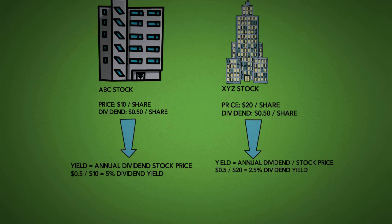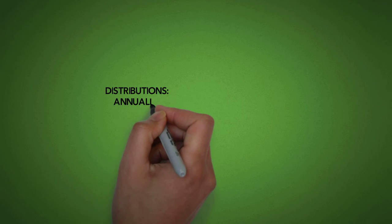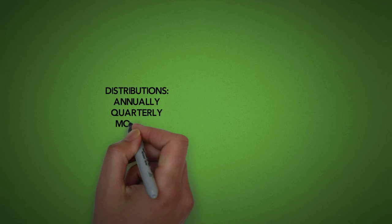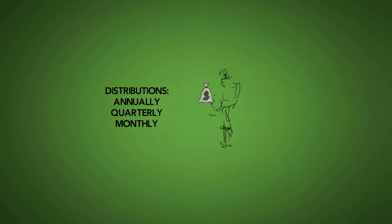An investor looking to use their portfolio to supplement their income would likely prefer ABC stock over XYZ, as it has double the dividend yield. Companies often pay dividends annually, quarterly, or monthly.